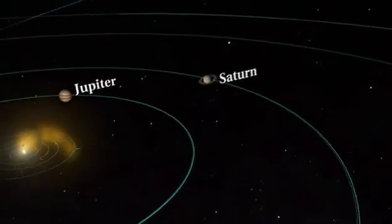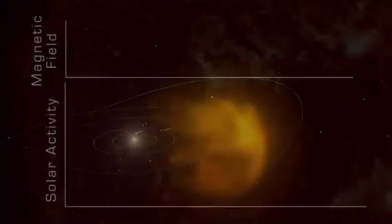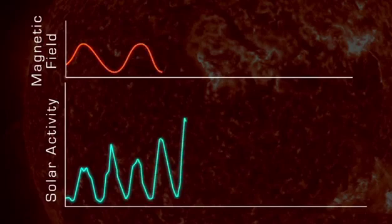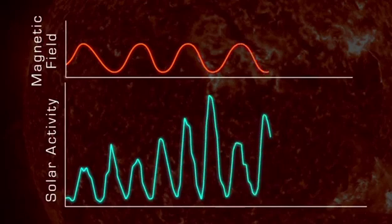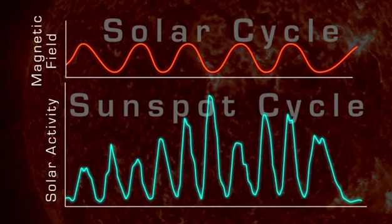As the sunspots increase, so does the frequency and severity of flares and CMEs. The Sun's 11-year cycle is a symptom of a longer 22-year cycle called the solar cycle, or hail cycle, which affects the Sun's magnetic fields.